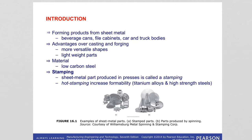Low carbon steel is the most commonly used sheet metal. There are also other metals shaped with this technique such as aluminum — like beverage cans and packaging — as well as titanium and other steels.